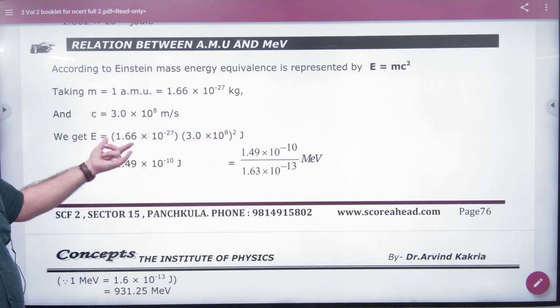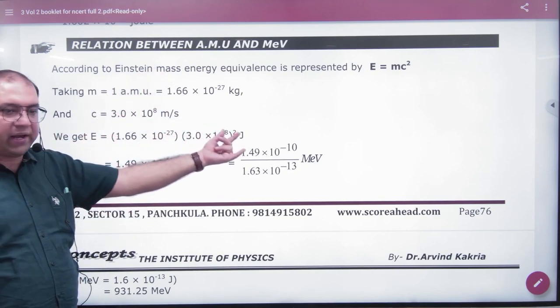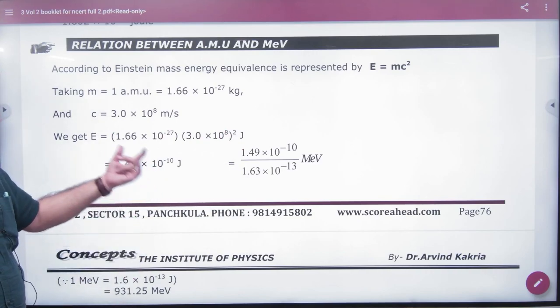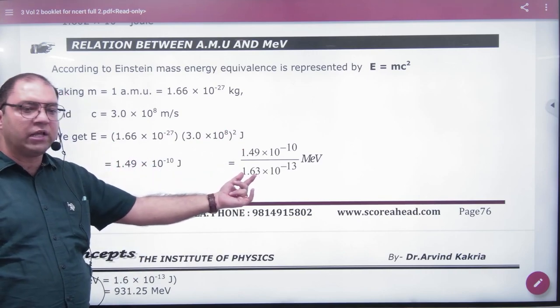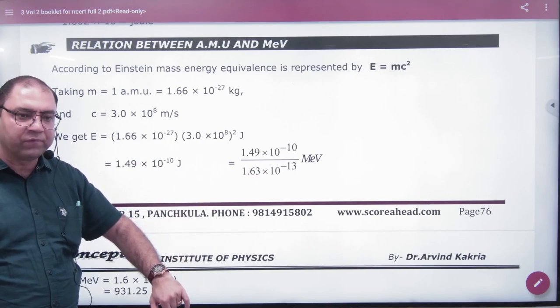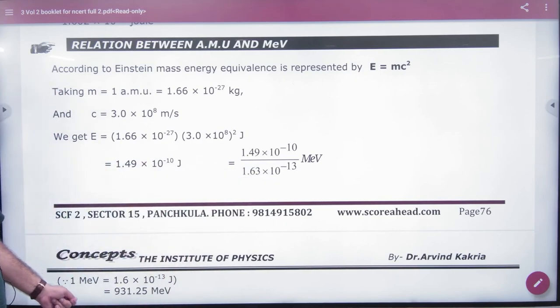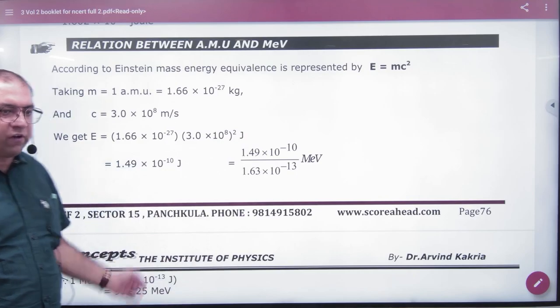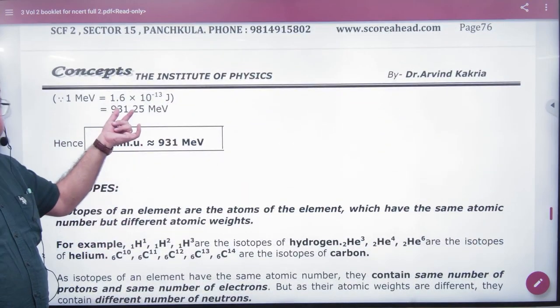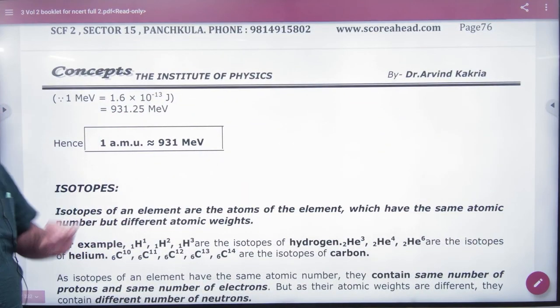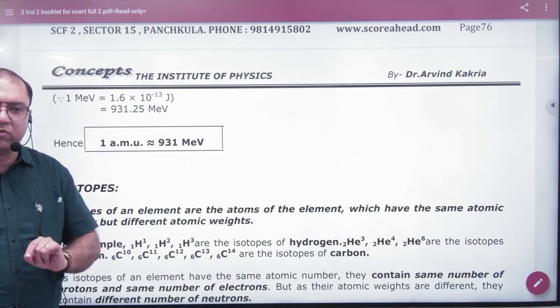So we take the mass we have, multiply by c square, and solve energy in joule. If I divide by 1.6 into 10 to power minus 13, then the answer will be in mega electron volt. And if I solve it, the approximate answer will be 931. So 931 mega electron volt we use many times.